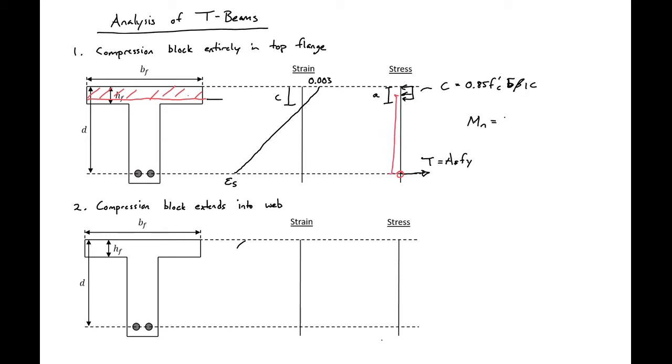Our moment is just equal to our force tension times our lever arm. So our force asfy times d minus beta 1c over 2. So we can see that this is just the same as if we had a rectangular section with width of bf and depth of steel equal to d.